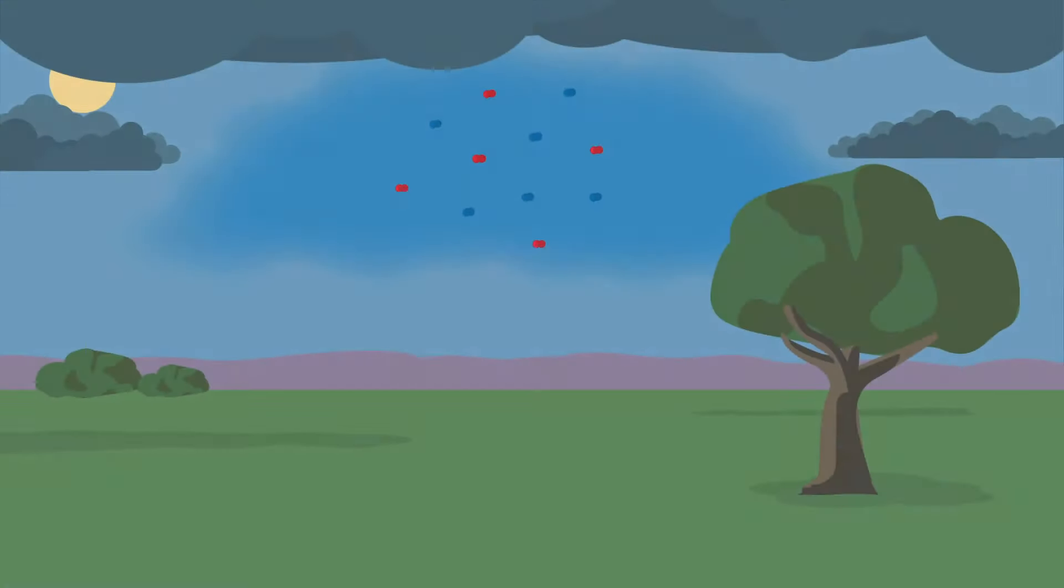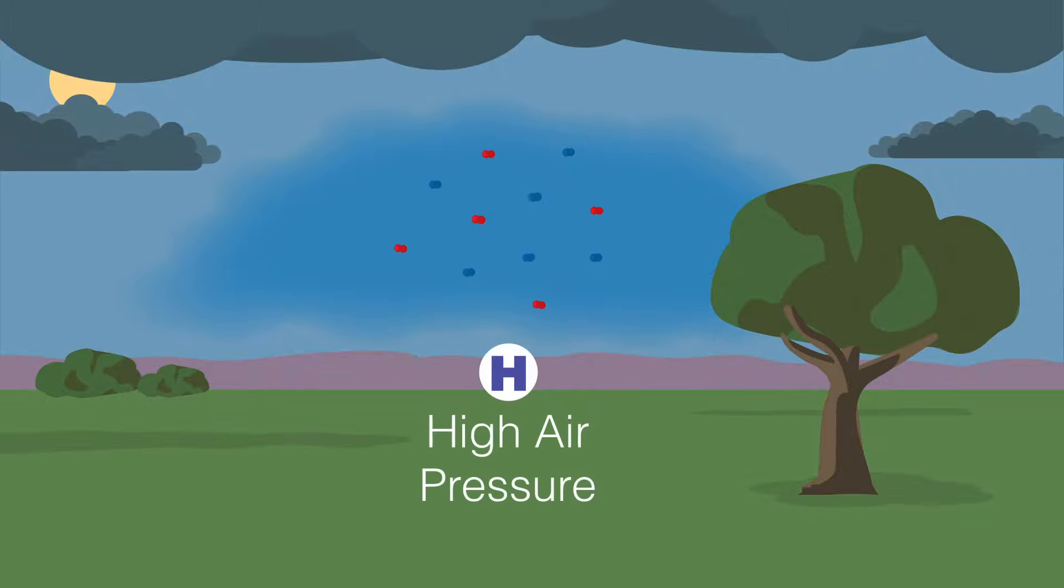When gas molecules are cold, they do the opposite. They slow down, move closer together, and sink. As cold air sinks down in the atmosphere, the weight of the air pushes down on Earth's surface a bit harder. This creates an area of high air pressure.